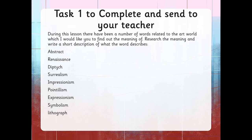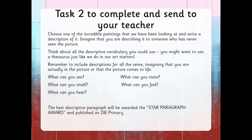The second task to complete and send to your teacher: I would like you to choose one of the incredible paintings that we have been looking at and write a description of it. Imagine that you are describing it to someone who has never seen the picture. Think about all the descriptive vocabulary you could use. You might want to use a thesaurus just like we do in our art starters. Remember to include descriptions for all the senses. Imagine that you are actually in the picture or that the picture comes to life. What can you see? What can you smell? What can you hear? What can you taste? What can you feel? The best descriptive paragraph will be awarded Star Paragraph and published on DB Primary. And I'm really looking forward to reading them.